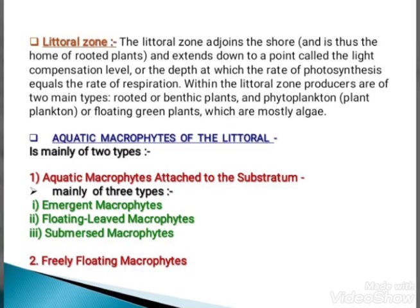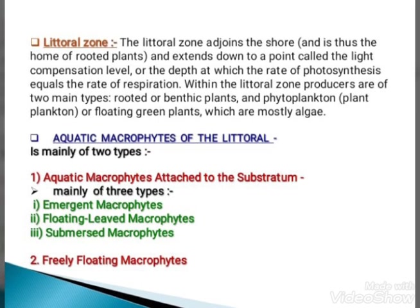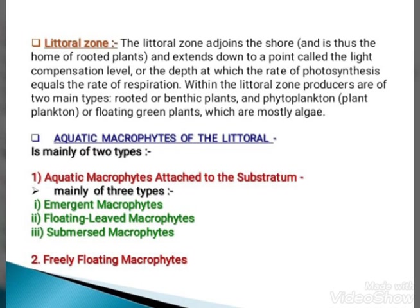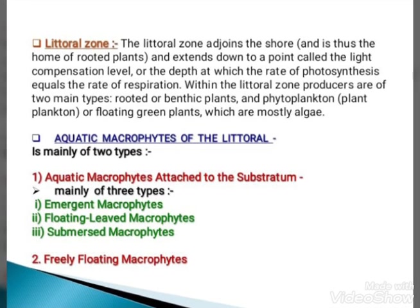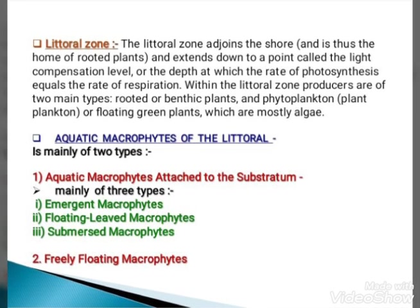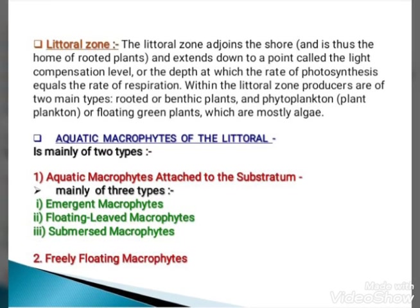Phytoplankton are mostly algae. Aquatic macrophytes of the littoral zone are mainly of two types: first, aquatic macrophytes that attach to the substratum — which include emergent macrophytes, floating-leaved macrophytes, or submerged macrophytes — and second, freely floating macrophytes.